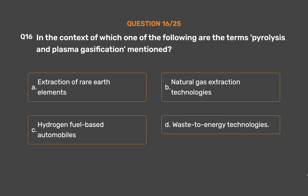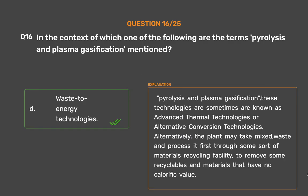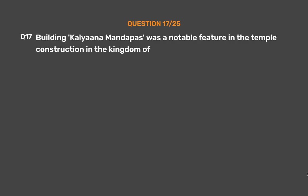The correct answer is Option D: Waste-to-energy technologies. Pyrolysis and plasma gasification are sometimes known as advanced thermal technologies or alternative conversion technologies. The plant may take mixed waste and process it first through some sort of materials recycling facility to remove recyclables and materials that have no calorific value.